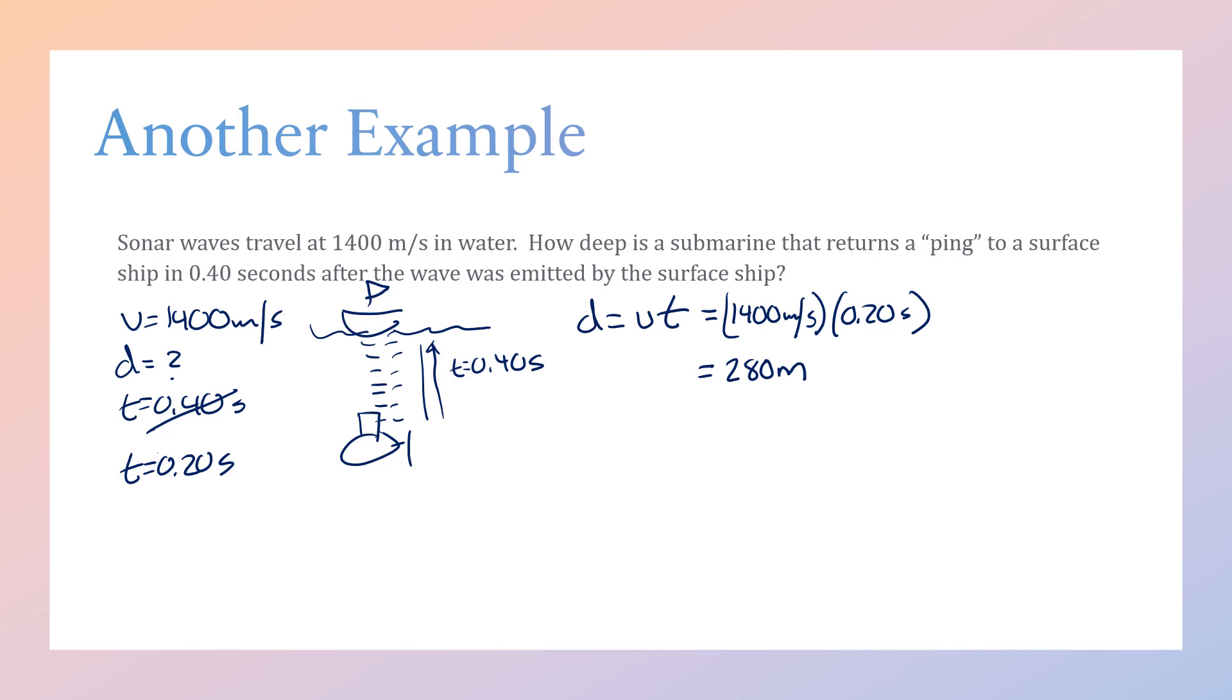Quick double check on significant figures: 0.20 has two, 1400 has two, 280 has two. I have a unit—meters—so I'm good to go. Box my answer and I'm all set. You're going to practice this with a couple of constant motion problems. I'm going to add acceleration into it and go through what those acceleration equations are before we dive into that.